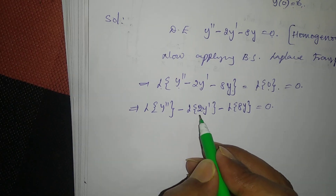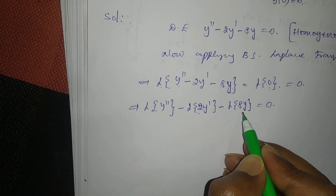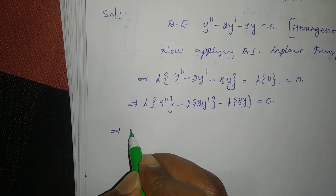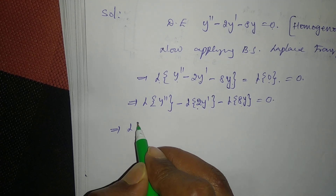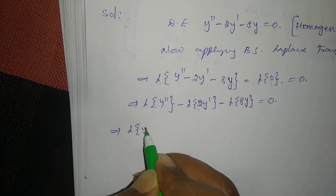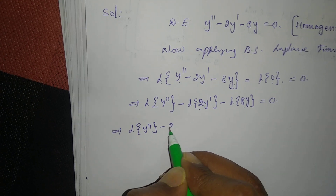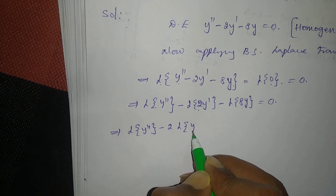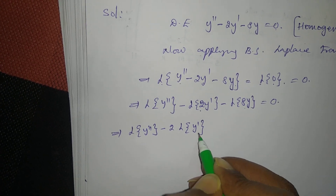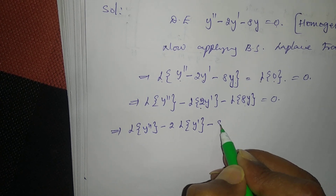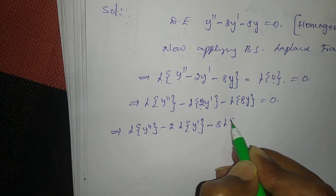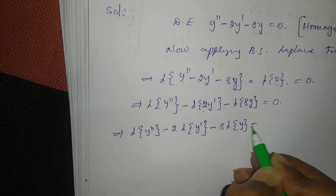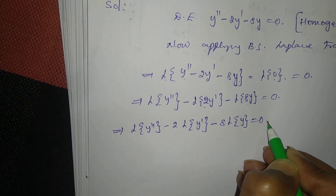Here, 2 and 8 are constants, so we take them outside: L{y''} - 2·L{y'} - 8·L{y} = 0.